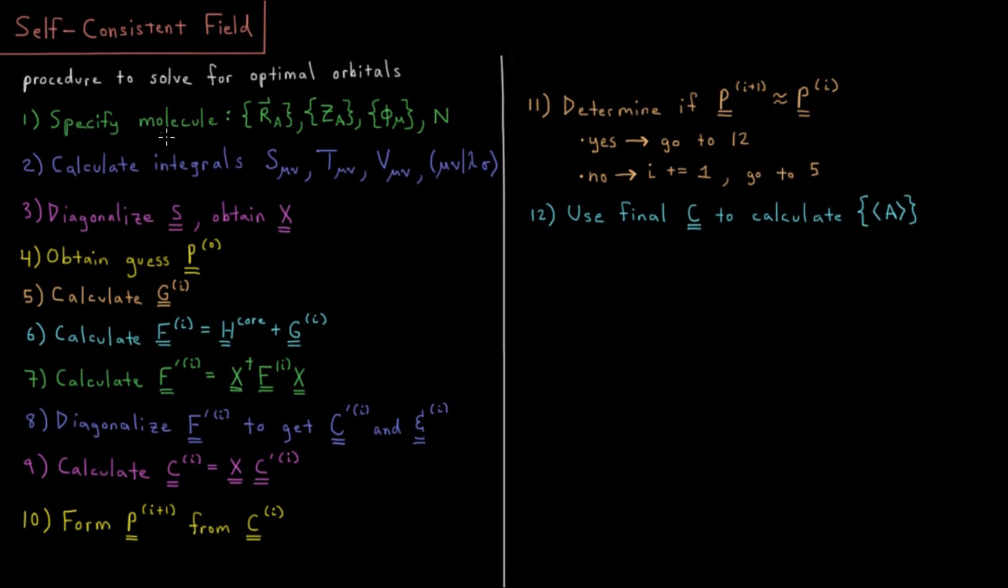Of course, Hartree-Fock is an approximation, so these properties aren't going to be exact, but they're going to be as good as the approximations we used to get them in this particular case. So one approximation is how close are we to the actual self-consistent density matrix. And then the other three are the approximations of Hartree-Fock theory itself, using the Born-Oppenheimer approximation, approximating using mean field approximation, and of course using a finite atomic orbital basis set. So this is actually how close we'll be.